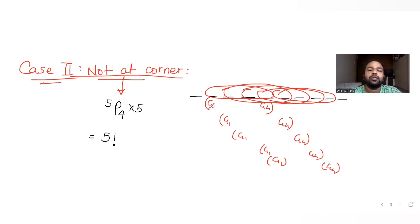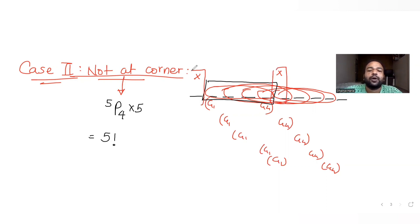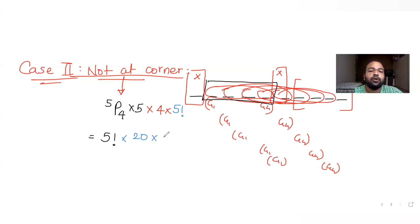When the four girls are in an interior block, the fifth girl cannot occupy the two positions immediately adjacent to that block. So the fifth girl has four options. The five boys fill the remaining five positions in 5! ways. This gives ⁵P₄ × 5 × 4 × 5! = 20 × (5!)².